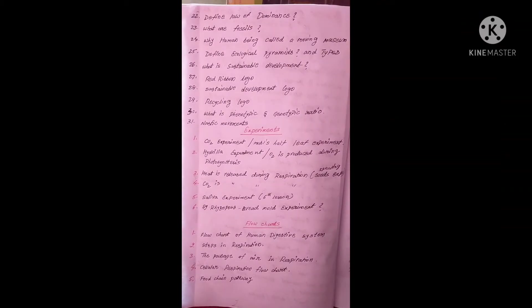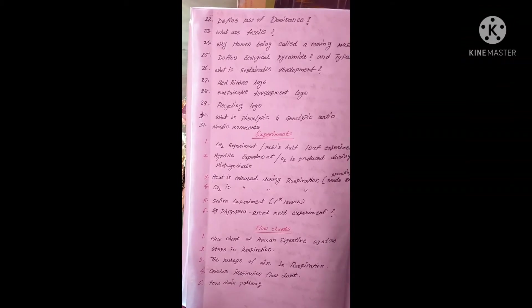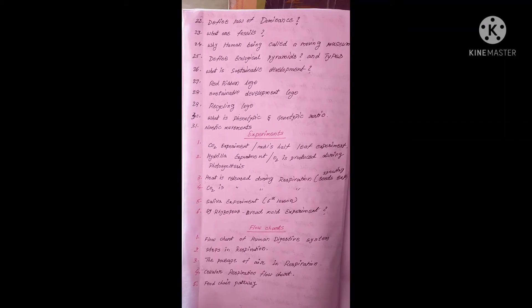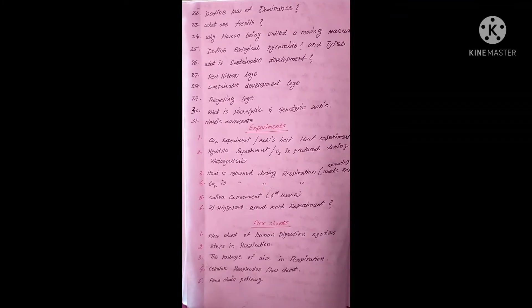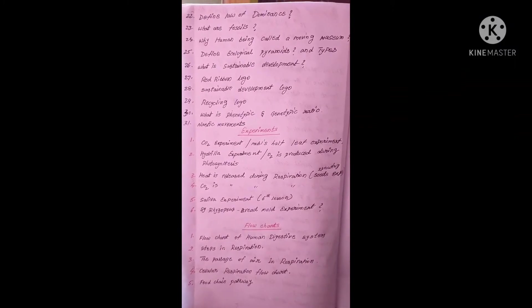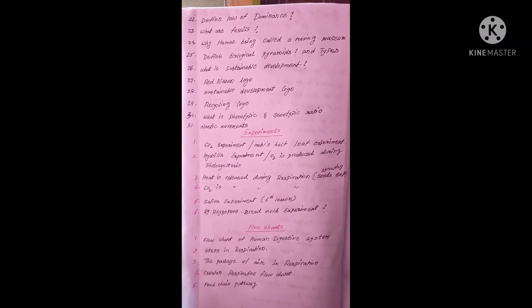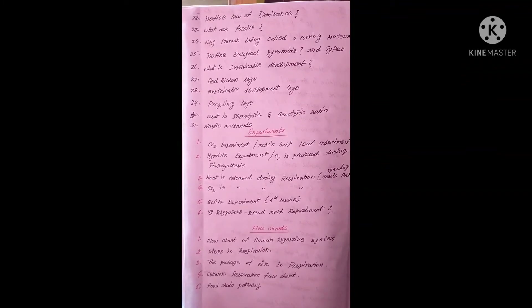Draw a red ribbon logo. Draw a sustainable development logo. Draw a recycling logo — definitely one logo will be given in the question paper. What are the phenotypic and genotypic ratios? Nastic movements — there are different types such as phototropism and geotropism.